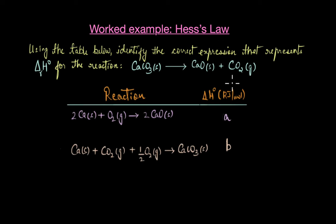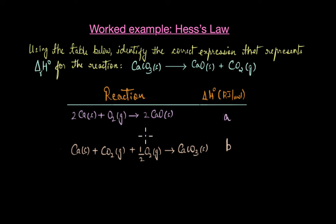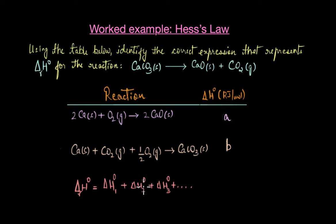The first question is: using the table below, identify the correct expression that represents the standard enthalpy change for the reaction CaCO₃ → CaO + CO₂. This reaction can be broken into two independent reactions as shown, and we have the corresponding ΔH° values. Let's use this information to figure out the standard enthalpy change for the given reaction using Hess's Law.